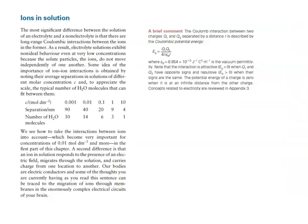Starting out with ions in solution: the most significant difference between a solution of an electrolyte and a non-electrolyte is that there are long-range Coulombic interactions between the ions in the former. As a result, electrolyte solutions exhibit non-ideal behavior even at very low concentrations because the solute particles — the ions — do not move independently of one another.